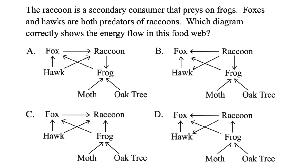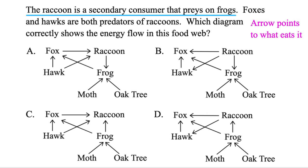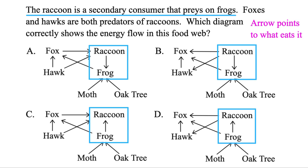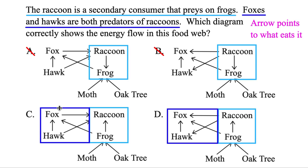The next one's a food web. The key is the arrow points to what eats it. The raccoon is a secondary consumer that preys on frogs — in other words, it eats frogs. Let's highlight all those connections. But one option says the raccoon gets eaten by a frog, same with bee, so both of those are out. But these are good — the frog gets eaten by the raccoon. Next, foxes and hawks are both predators of raccoons, so they eat them. This option has the fox getting eaten by the raccoon, so that's no good. But here the raccoon's eaten by the fox — that's the correct one.